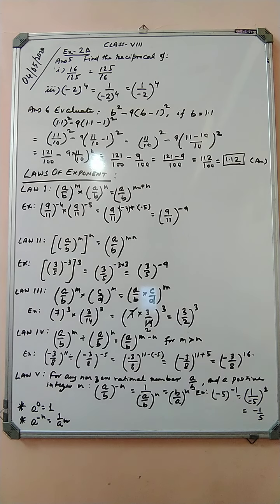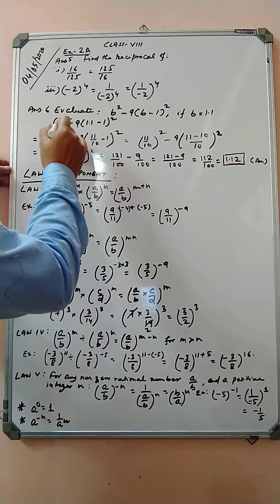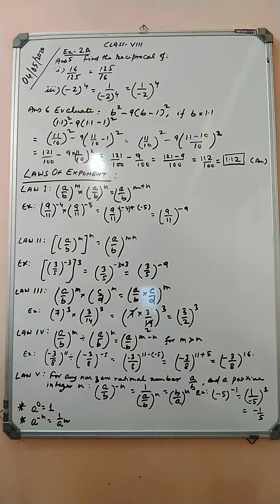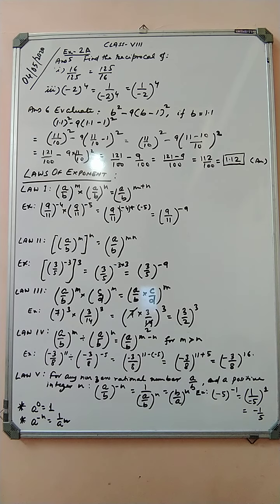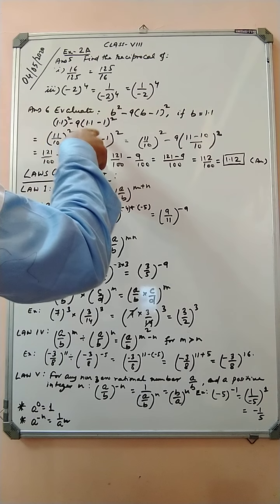Now let us come to question number six: evaluate b squared minus 9 bracket (b minus 1) whole square, if b equals 1.1. First we substitute the value b = 1.1: so we get 1.1 squared minus 9 bracket (1.1 minus 1). Now 1.1 squared — 1.1 can be written as 11 by 10 — whole squared, minus 9 into bracket (11 by 10 minus 1).